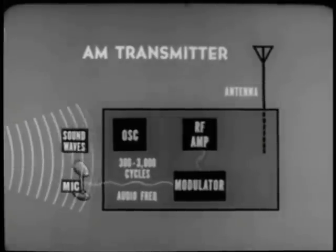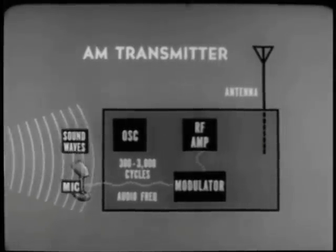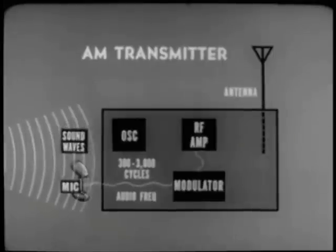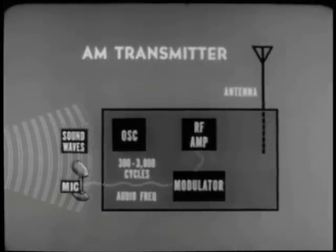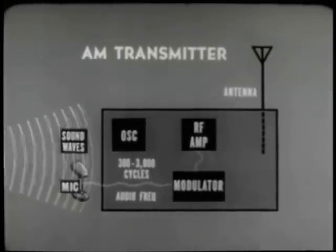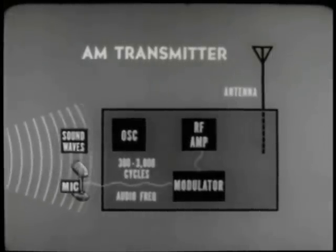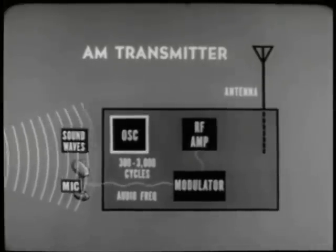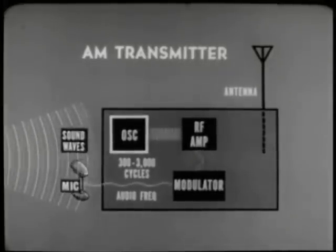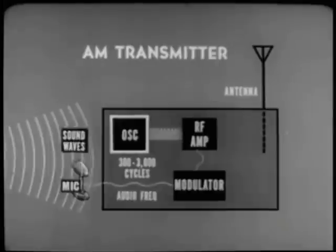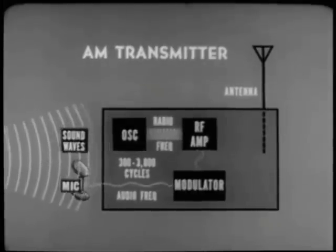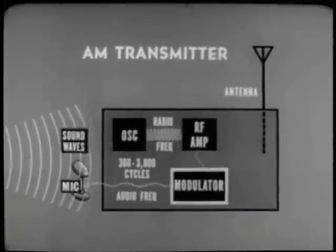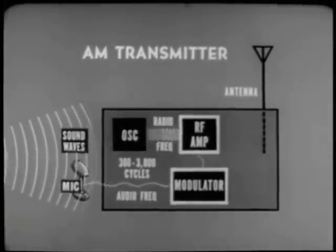Audio frequencies generally fall within a range of from 300 to 3,000 cycles per second. However, it is not practical to transmit these audio frequencies directly. An oscillator provides a much higher frequency. This radio frequency wave is called a carrier.